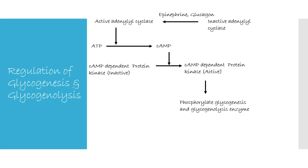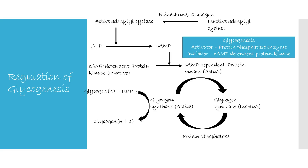In the regulation of glycogenesis and glycogenolysis, epinephrine and glucagon activate adenylyl cyclase, which produces cyclic AMP. Cyclic AMP activates cyclic AMP-dependent protein kinase. Phosphorylation of glycogen synthase by this kinase makes it inactive, while removal of the phosphate group by protein phosphatase makes it active. Therefore, the activator of glycogenesis is protein phosphatase and the inhibitor is cyclic AMP-dependent protein kinase.